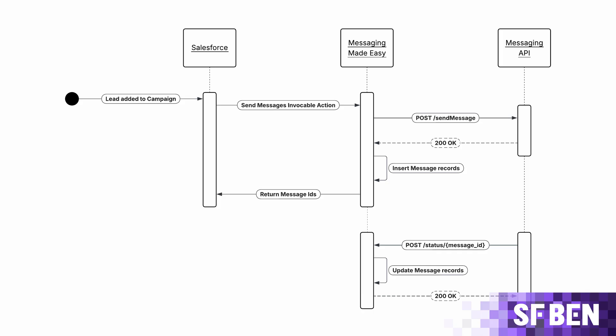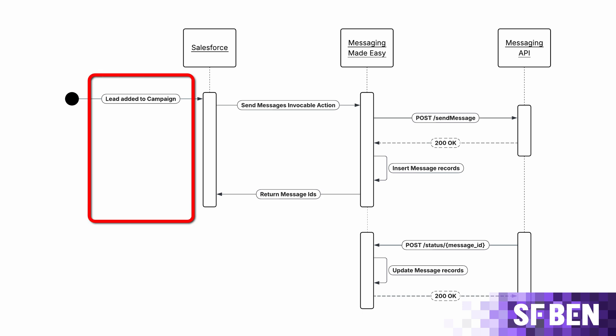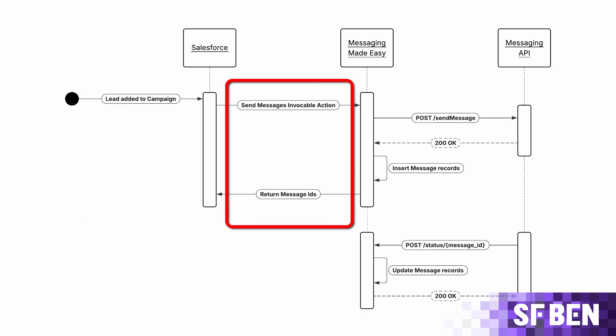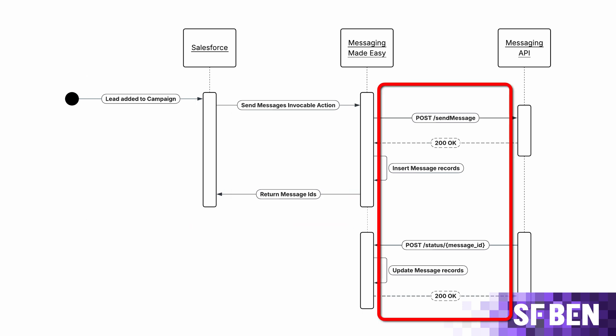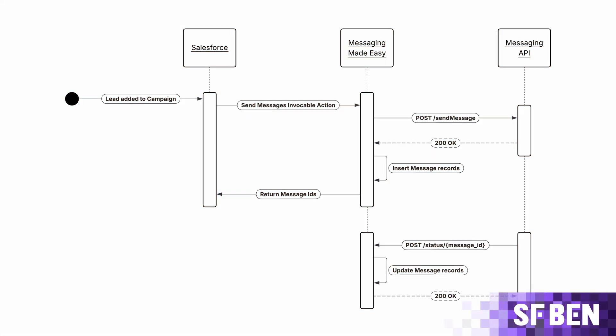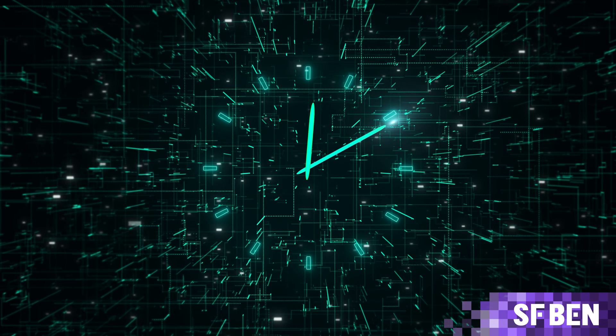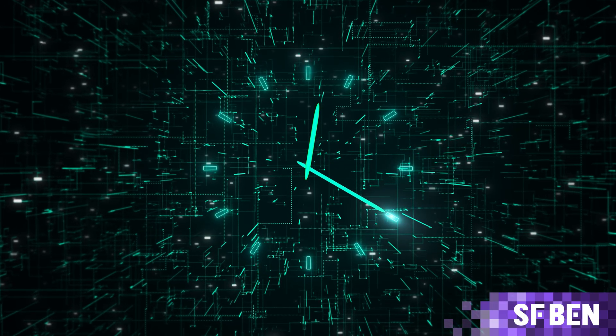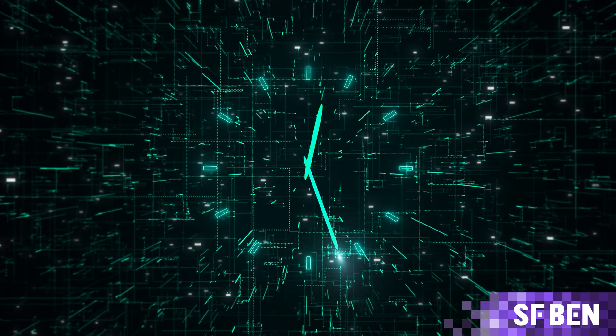Here we can see the interaction between our Salesforce configuration, our messaging app from the AppExchange, and the third-party messaging API. UML sequence diagrams make the order of operations clear, as well as detailing the API endpoints being called. We can also see here that we have a bi-directional integration, as the messaging platform is sending data back to our Salesforce app to update the records with delivery information. We could also enhance this diagram with timing metrics to debug any performance issues when testing and to highlight potential bottlenecks.